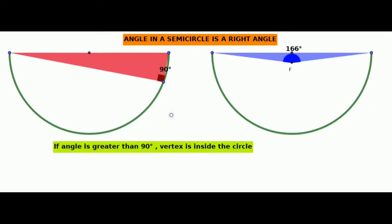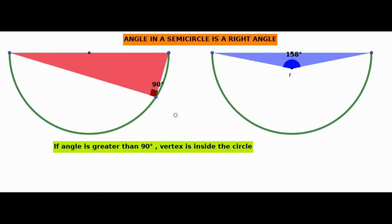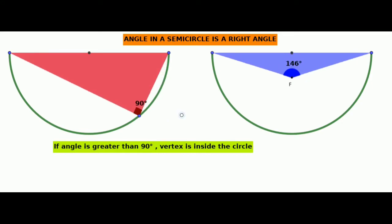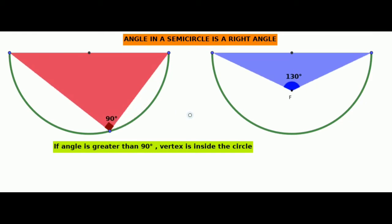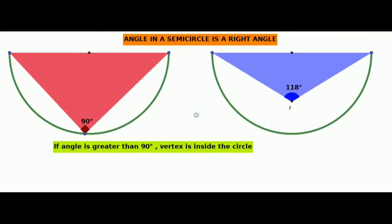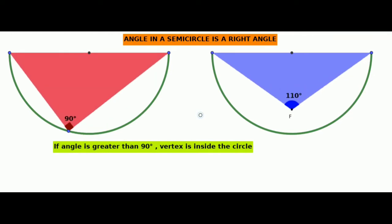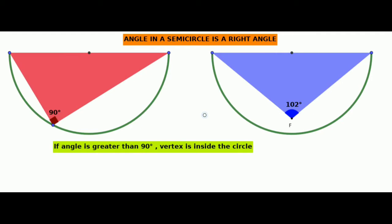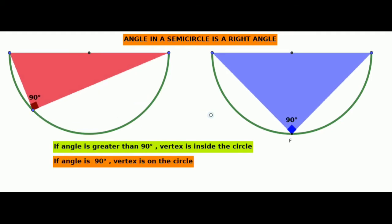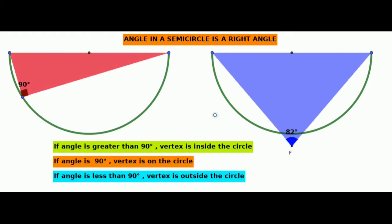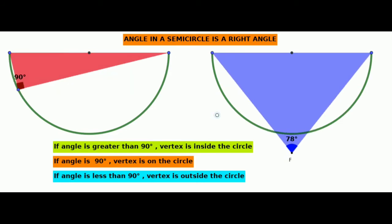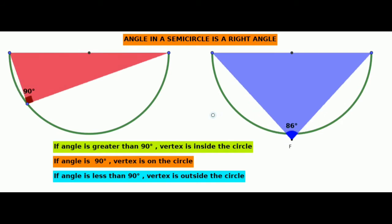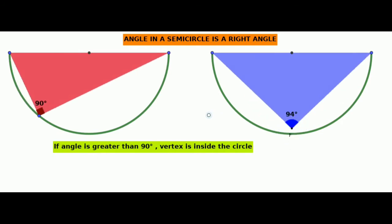Just see the video. In the first figure, the red triangle's third vertex moves along the circle, so the measure remains 90 degrees. When the third vertex is inside the semicircle, its measure is more than 90 degrees. When it reaches the point on the circle it becomes 90 degrees, and when it is outside the circle it becomes less than 90 degrees.